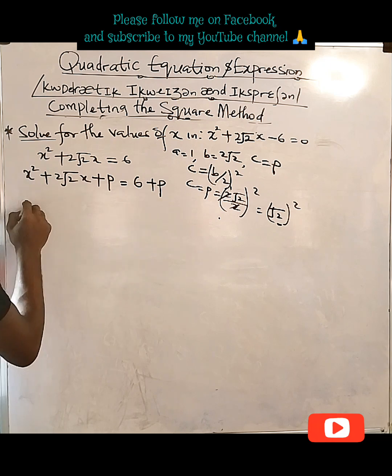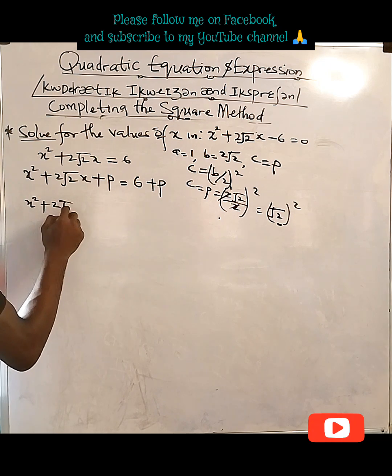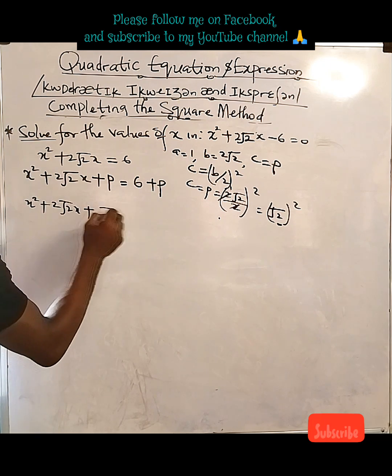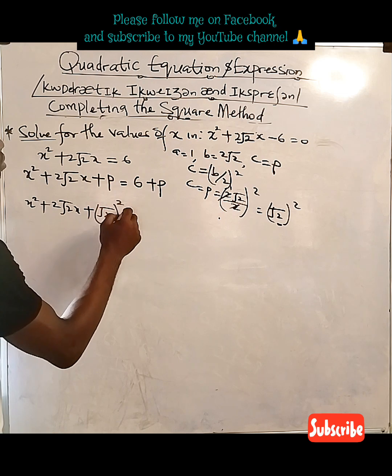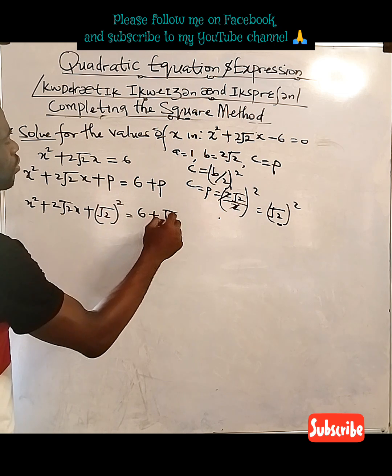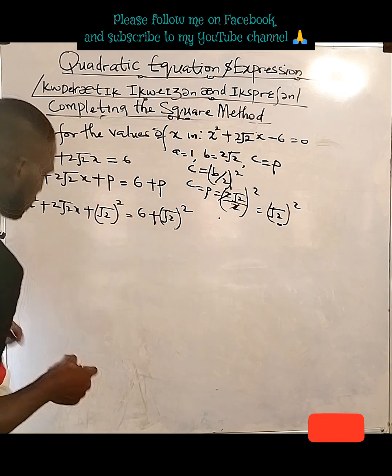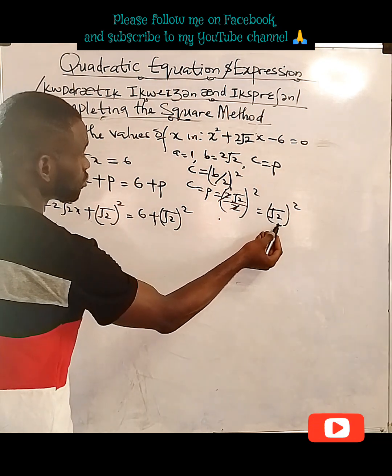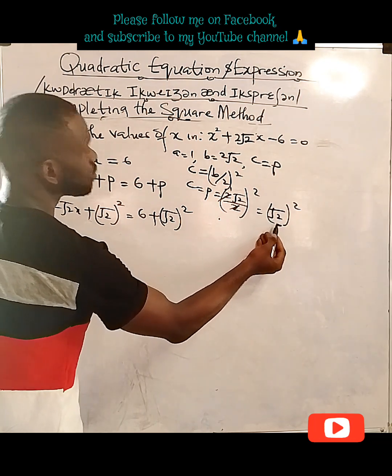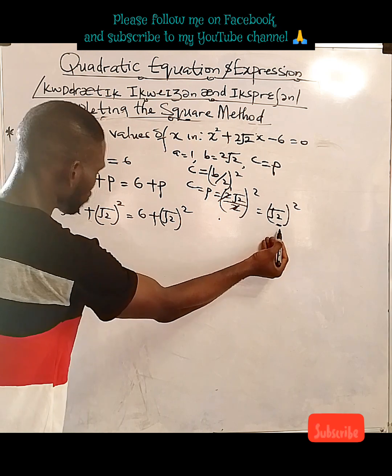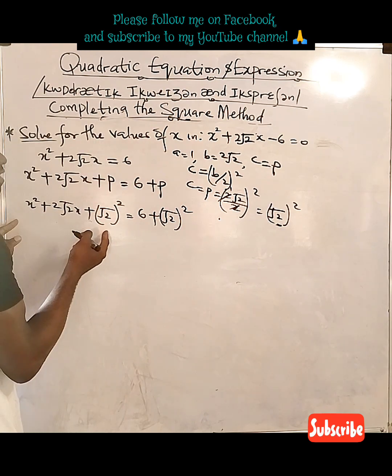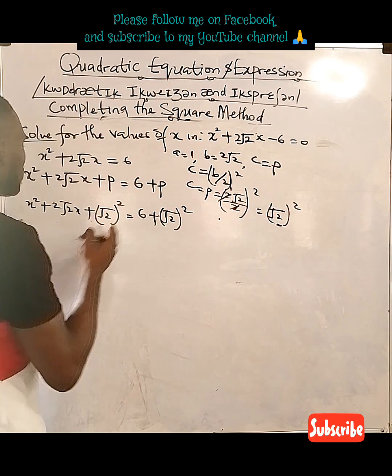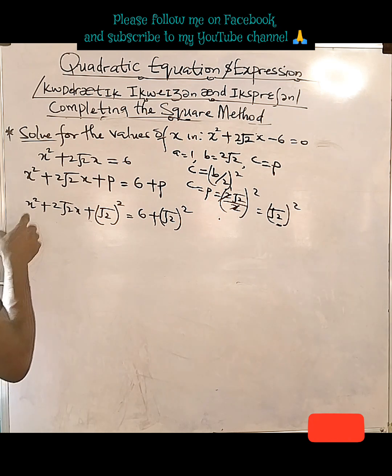So we're going to add this to both sides. That's x squared plus 2 root 2 x plus root 2 raised to power 2 equals 6 plus root 2 raised to power 2. There's no point trying to break this down. If you combine root 2 raised to power 2, you end up with just 2. So if we leave it this way, it's going to help us find this easily factorizable.